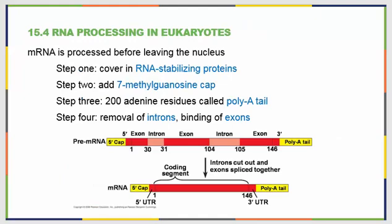Once we have these RNAs, they need to be processed — at least in eukaryotic organisms. In step 1, the RNAs are covered in RNA-stabilizing proteins to keep them from sticking to themselves. In step 2, we add a methyl guanosine cap — a bunch of guanines added to the 5' end.